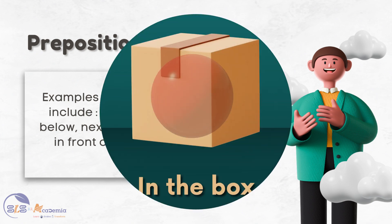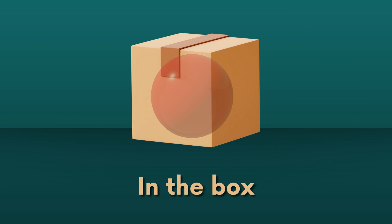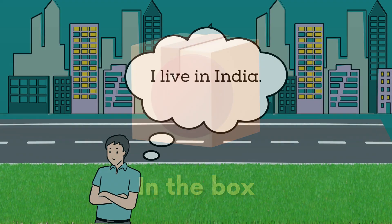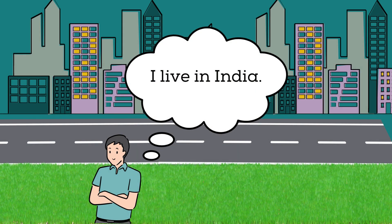The preposition 'in' denotes an object's location within a defined space or container. For example, 'the ball is in the box' means that the ball is located inside the box. 'In' can also be used to describe a general location such as a city or country, as in 'I live in India.'